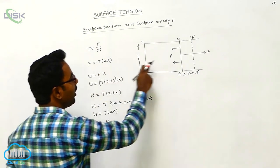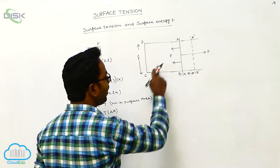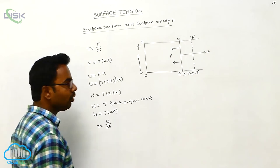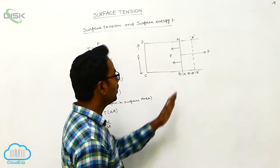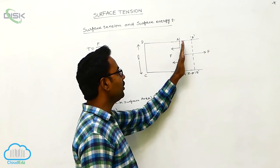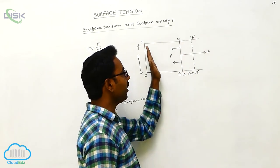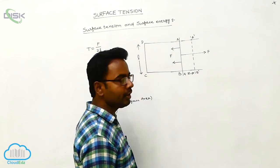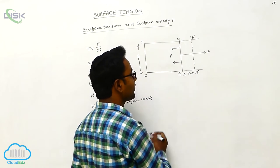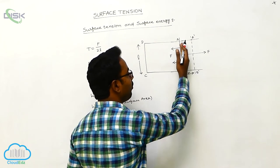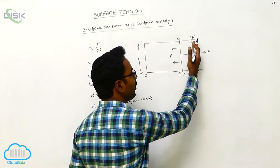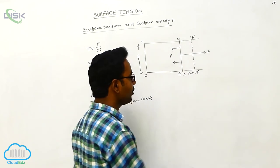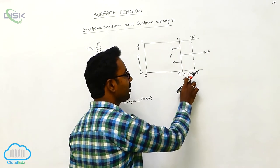Therefore, T = F / 2L, and the force acting on the wire AB toward the left side is F = T × 2L. Now, I want to move the wire AB to the right side — that is, the force applied by the soap film through a distance X, meaning the wire AB is pulled from position AB to position A'B' through a distance X.